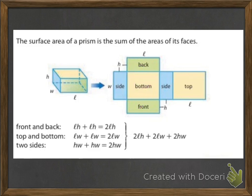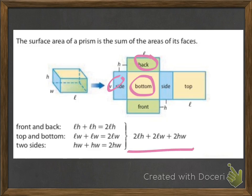Or you could find the area of the back and multiply it times two, because the front is the same. You could do the area of the bottom, multiply that by two, because the top is the same. And then find the area of one of the sides, multiply that by two, because they're both the same. And then add those three amounts together. That's where we get two times length times width, plus two times length times height, plus two times height times width.